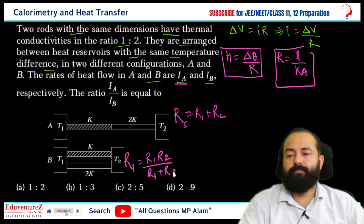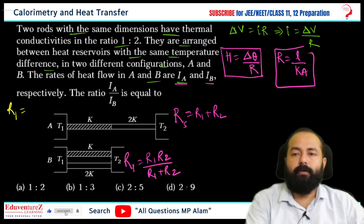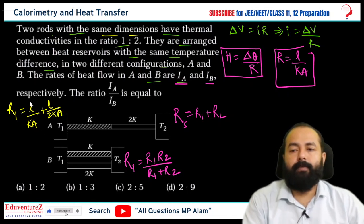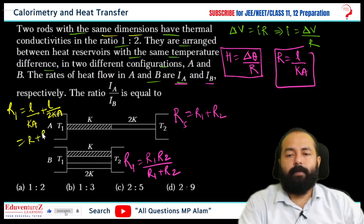The distance between them is the same, length is the same here because the dimension is same. So L by K into area plus L by K into area. The dimension is same and the length is same, that length is same and the area.